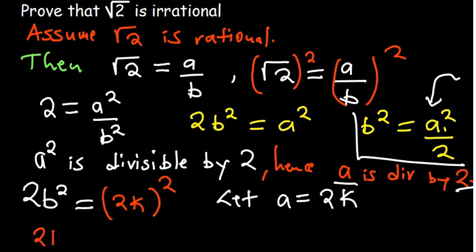You have 2B squared is equal to 4K squared. So we have 2B squared is equal to 4K squared. You can divide both sides by 2. So B squared becomes equal to 2K squared.